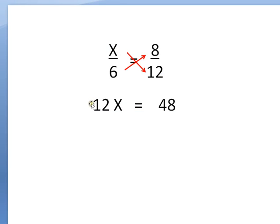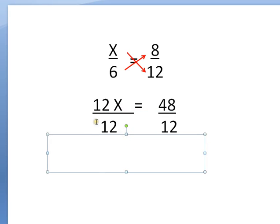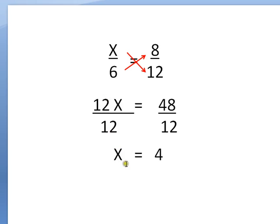So 12 times X is 12X. 6 times 8 is 48. Well, I know if I have 12 times X, and I want to get that X by itself, I have to use the inverse operation. The inverse operation of multiplication is division. So I'm going to divide it by 12. And if I divide one side by 12, I have to divide the other side by 12. So 12X divided by 12. Well, those are just 1. They can cancel each other out. That's X. And 48 divided by 12. Well, that's just 4. So X equals 4.